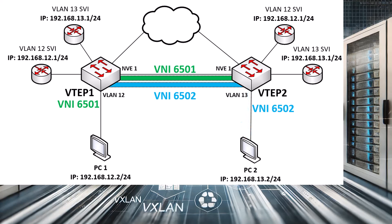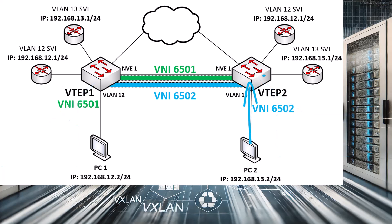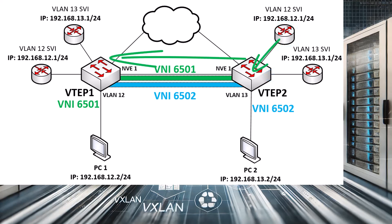On the way back, VTEP2 is the ingress VTEP, and VTEP1 is the egress VTEP. So routing and bridging will take place on VTEP2. The packet will be routed to the default gateway, which is SVI 13. Inter-VNI routing will forward that to the VLAN 12 SVI, and the packet will be forwarded on VNI 6501 to VTEP1. We are now at the egress VTEP, which is VTEP1, and thus only bridging will take place. The packet is then forwarded to PC1 on VNI 6501.